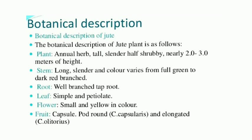Historical documents from the era of Mughal Emperor Akbar state that Bengali villages in India are the main origin of jute. Looking at the botanical description: the jute plant is an annual herb, tall, slender, and half-shrubby, nearly 2 to 3 meters in height — taller than cotton. The stem is long and slender, with color varying from full green to dark red and branched. Roots are well developed, well branched, with a tap root system. Leaves are simple; flowers are small and yellow. The fruit is a capsule pod, rounded in Corchorus capsularis and elongated in Corchorus olitorius.